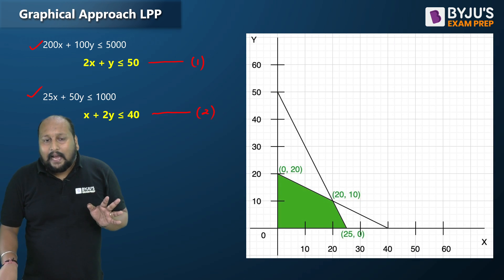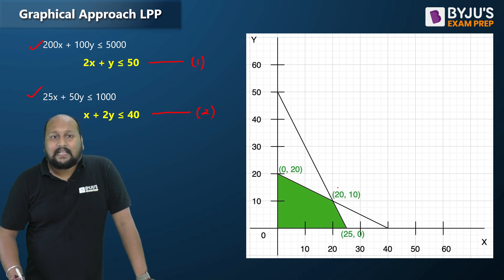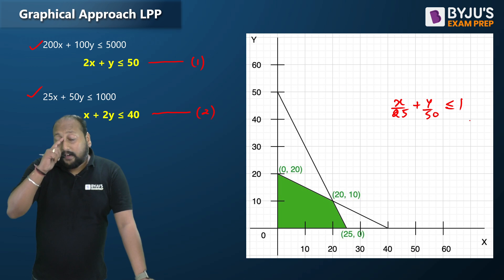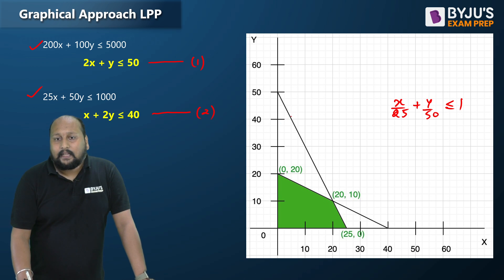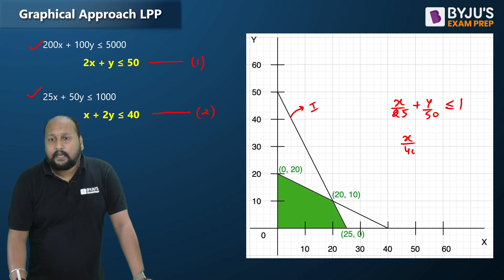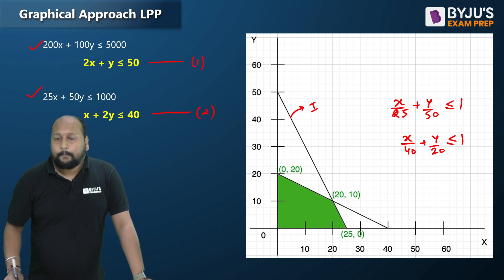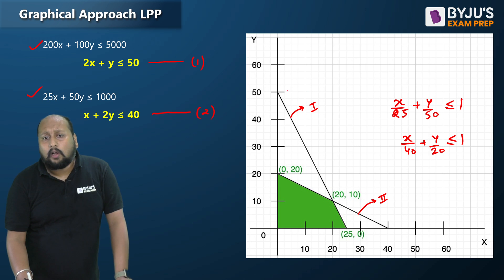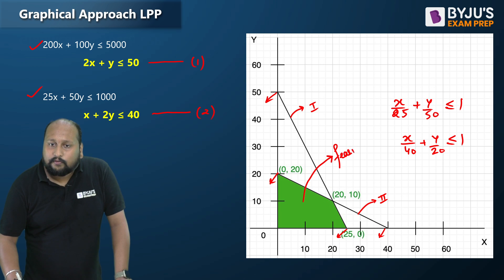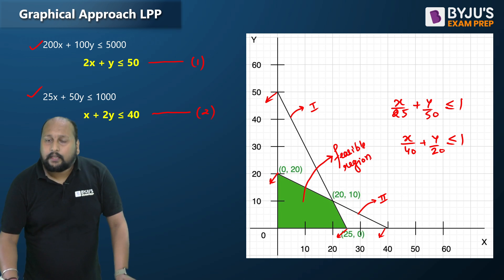When we plot the graph, we get a feasible range. The first constraint can be written as x/25 + y/50 ≤ 1, giving us constraint line one. The second constraint is x/40 + y/20 ≤ 1, giving us constraint line two. Since these have inequality signs, all values toward the origin satisfy both constraints. This shaded green region is called the feasible region.